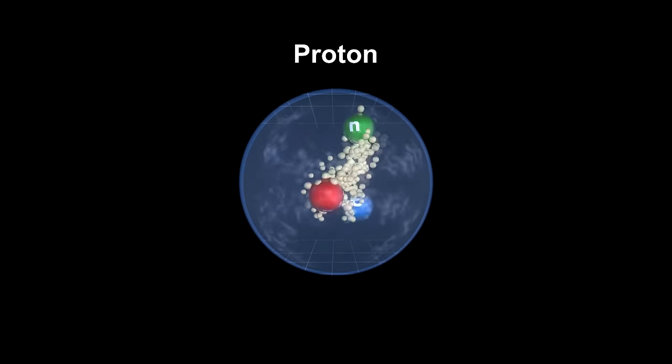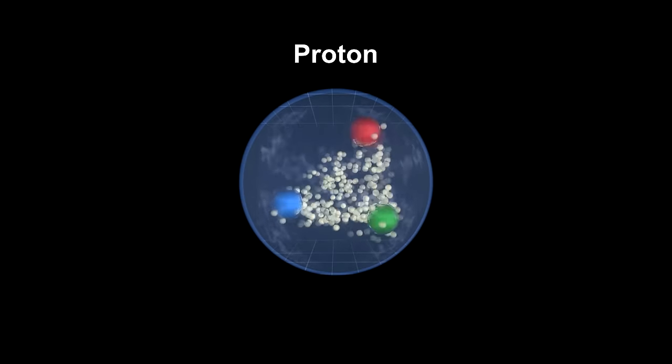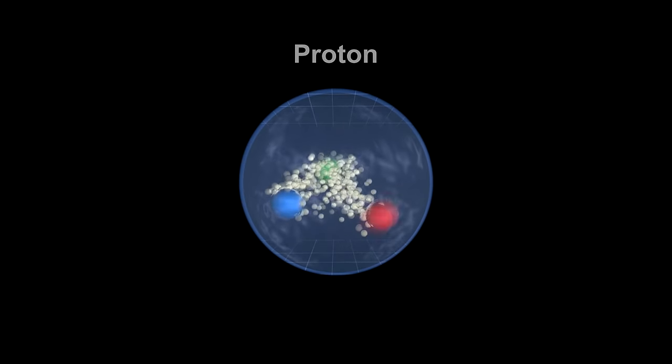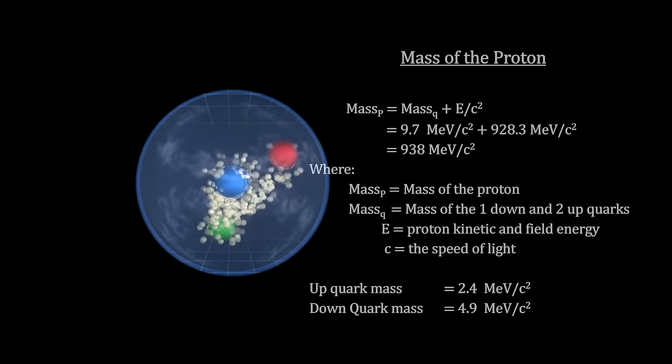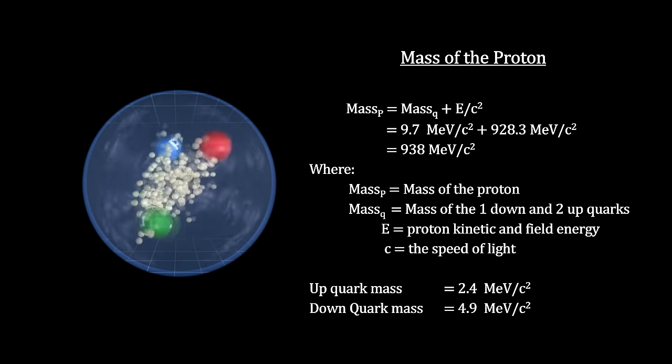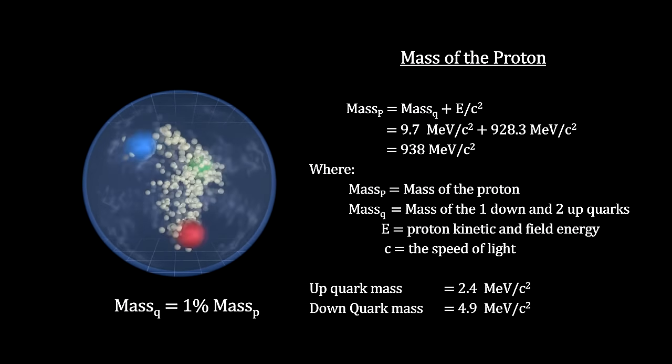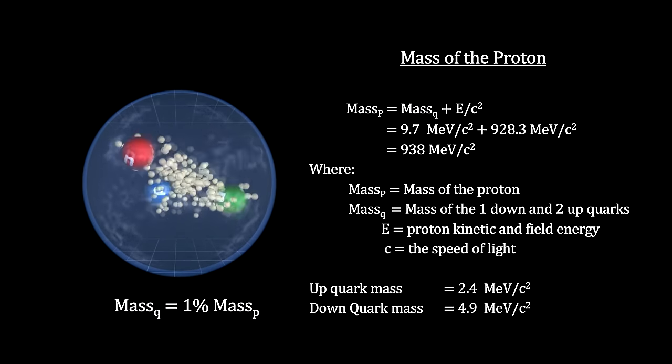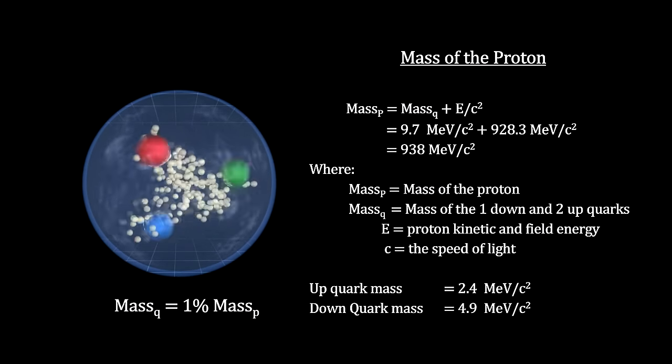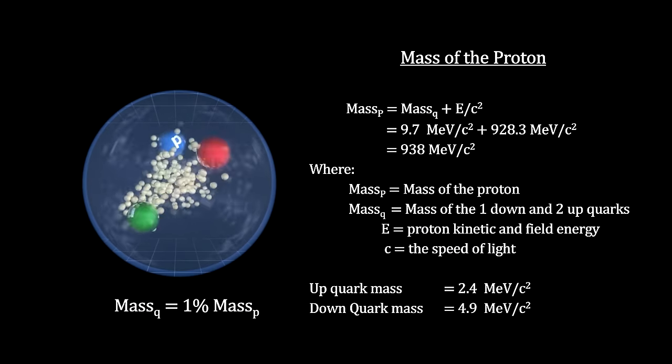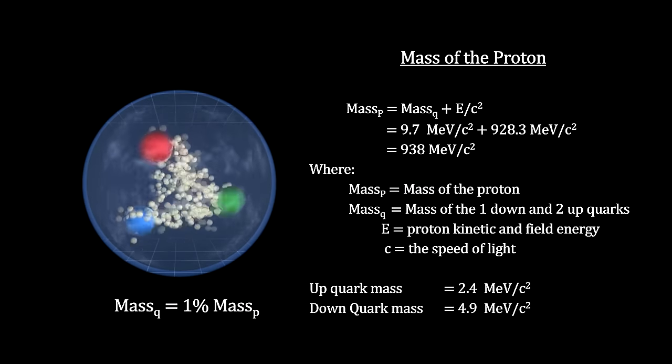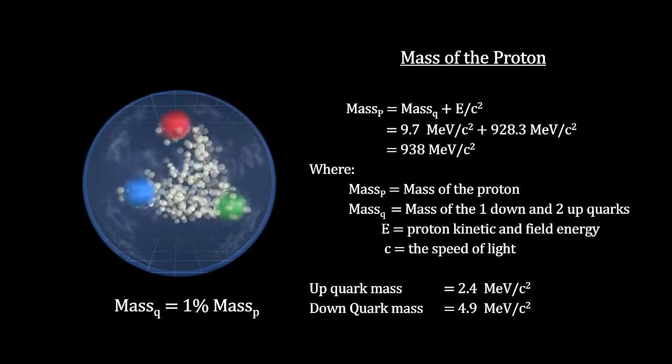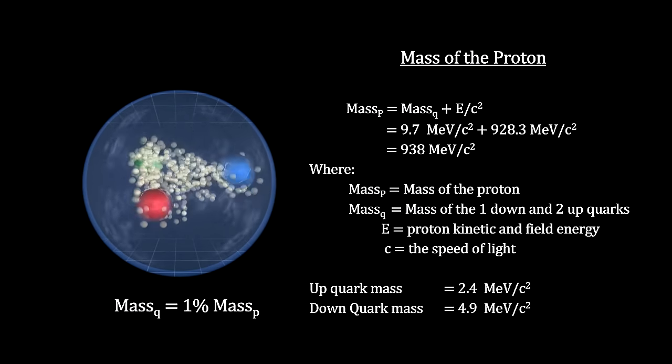The proton is key to helping us understand the origin of mass. The only stable elementary particles in the proton with mass are the two up-quarks and one down-quark. Their tiny masses constitute only 1% of the mass of the proton. 99% comes from the energy of the fields and motion of the moving parts following the famous E equals mc squared formula. So it is quite accurate to say that confined energy is the origin of mass. We'll bring this point home when we get to the Higgs boson.